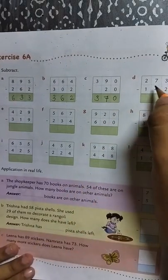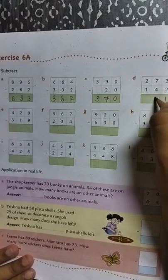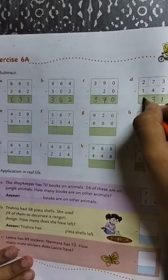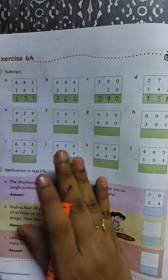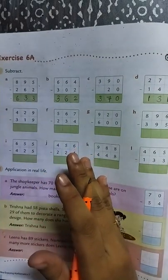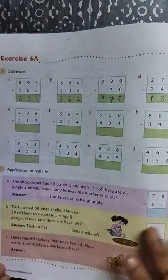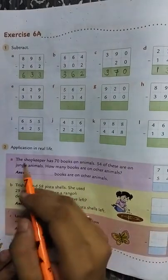Now look at the next question: 273 minus 142. 3 minus 2 is 1. 7 minus 4 is 3. And 2 minus 1 is 1. So in this question you have to start from the one's place, and then you have to subtract ten's place, and then hundred's place. You have to do this question like this only.